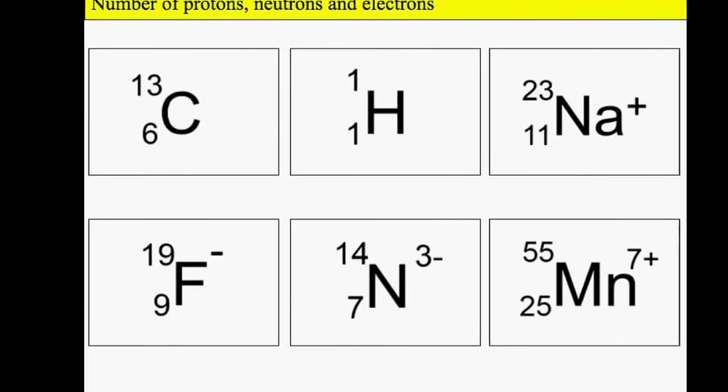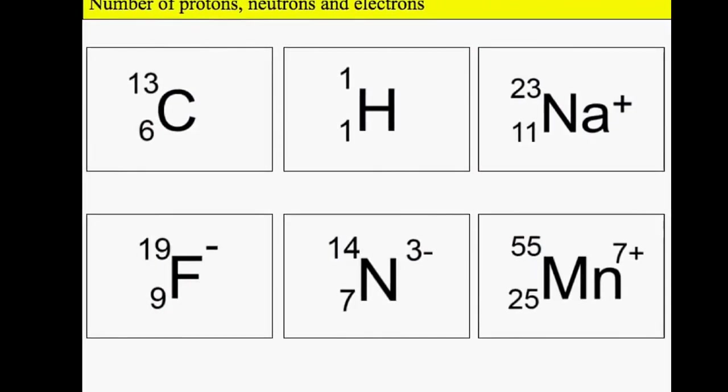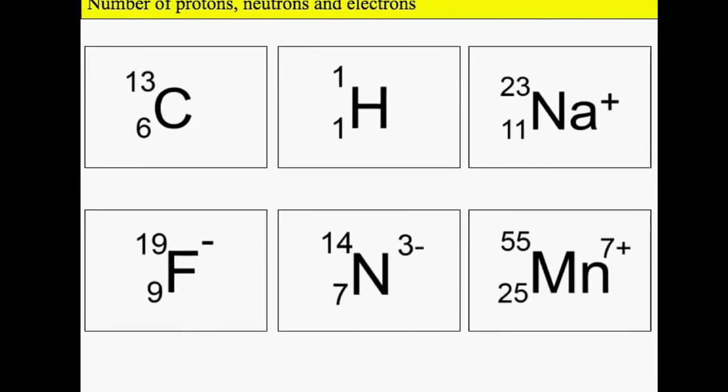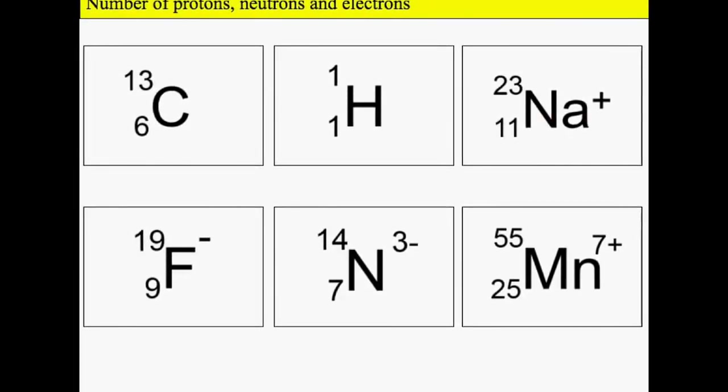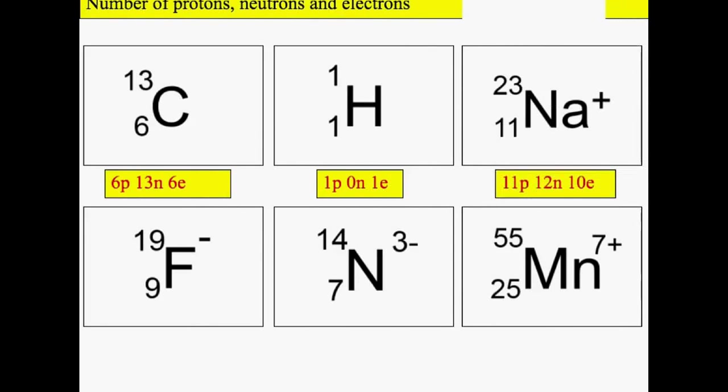Work out the number of protons, neutrons and electrons for these atoms and ions. There's carbon, there's hydrogen, here's sodium. Sodium has one less electron because it's a positive ion, so it's lost a negative electron.